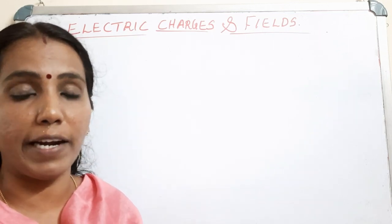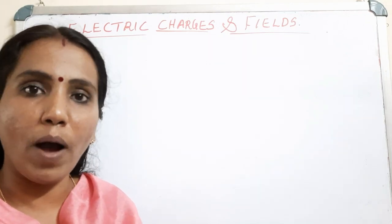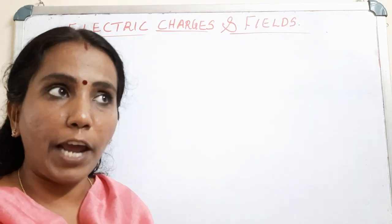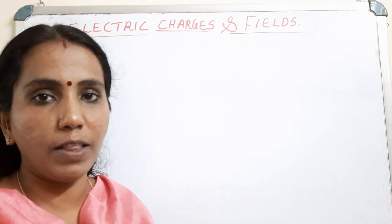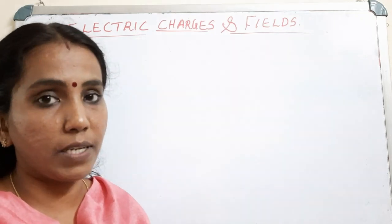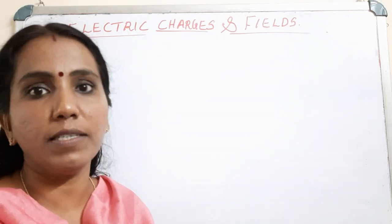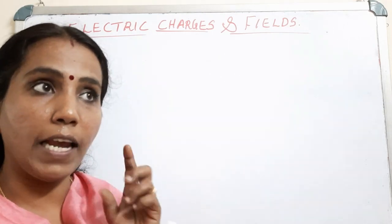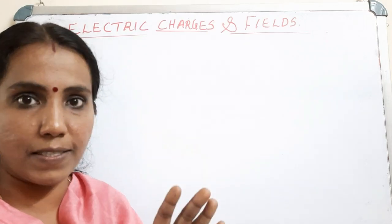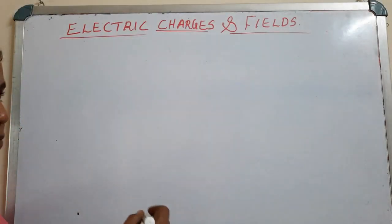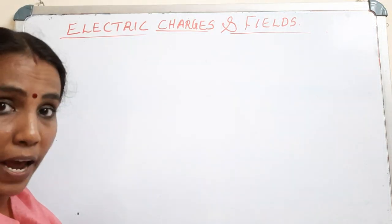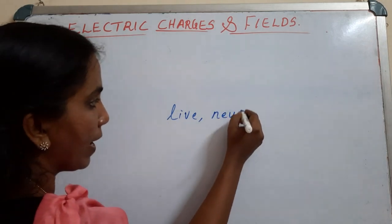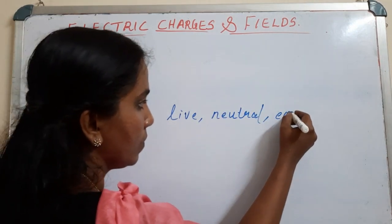There are two purposes of providing earthing. The first is to provide safety for people who handle equipment or devices with metallic coverings. The second is to protect the device from excess current. In a household wiring system where we use different electrical appliances, we have three wires: live wire, neutral wire, and earth wire.